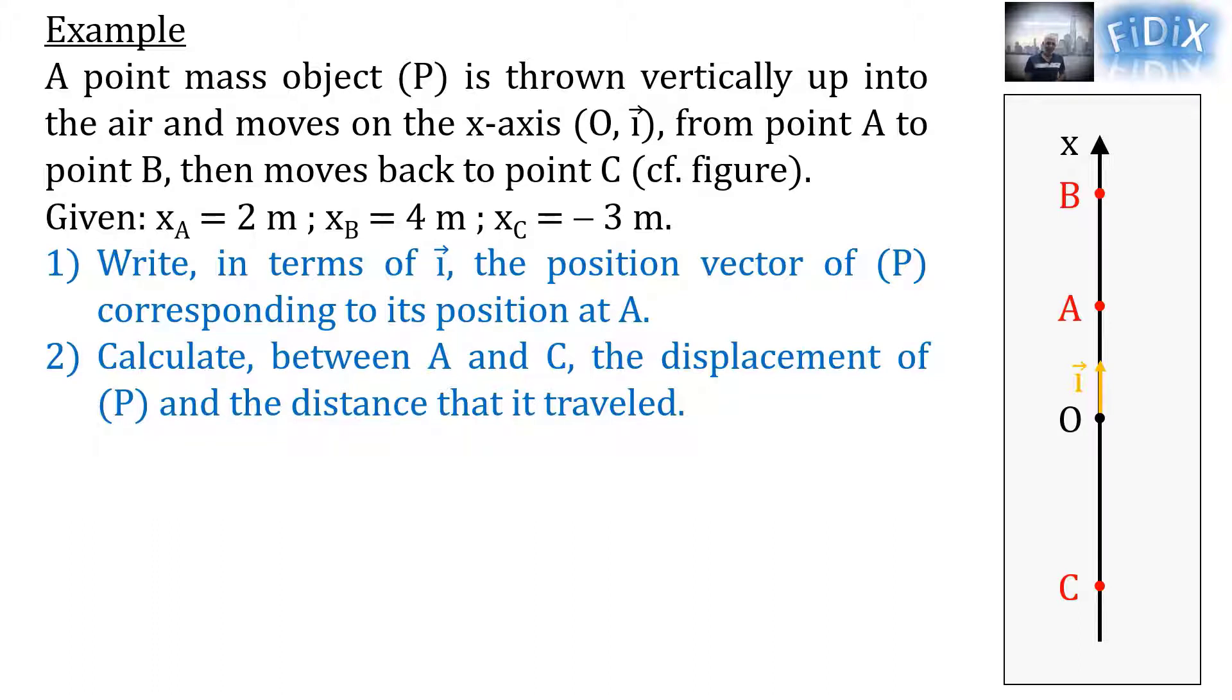Question 2: Calculate between A and C the displacement of P and the distance that it traveled. To answer question 1, we write position vector OA equals XAI and we replace XA by 2.